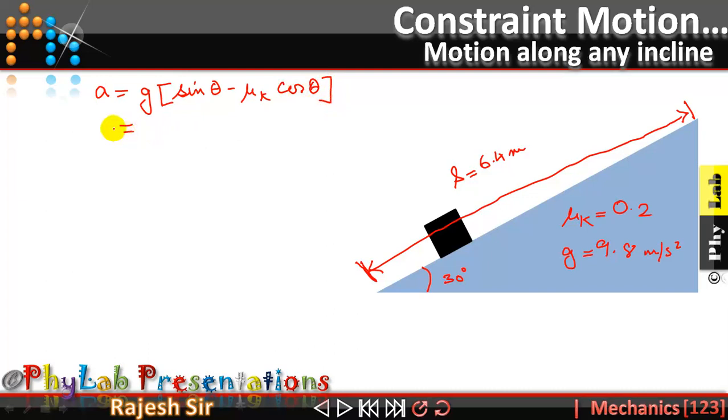So let's put up the values over here directly in this expression. a is equal to g, 9.8 bracket open sine of 30 degrees minus μk which is 0.2 into cos of 30 degrees.